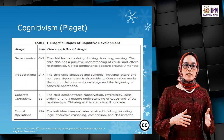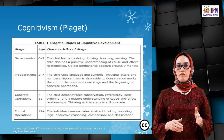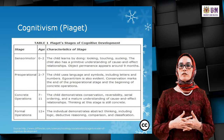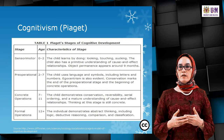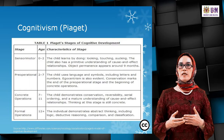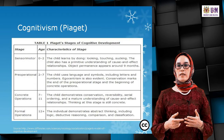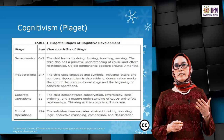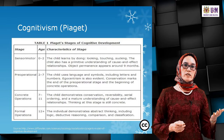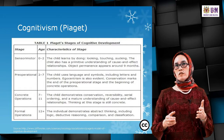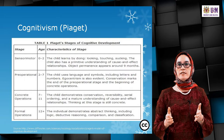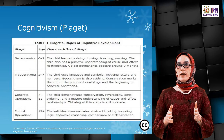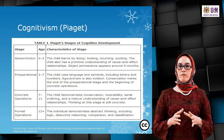From twelve years old and above is the formal operational stage, where the individual demonstrates abstract thinking, including logic, deductive reasoning, comparison, and classification. If you want a child to engage in higher-order thinking skills — as discussed in Bloom's Taxonomy — your audience must be at least twelve years of age, because cognitivism tells us that formal operations only emerge at this stage.